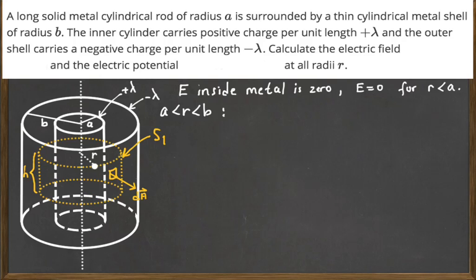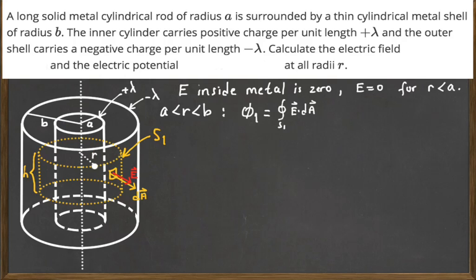We calculate the electric flux through the side surface S1 of the Gaussian cylinder. The area vector at every point on the side surface is perpendicular to the surface, and because of symmetry the electric field points in the same direction due to the positive charge inside. The top and bottom surfaces of the cylinder contribute zero flux because the electric field and area vectors are perpendicular there. So the only flux is from the side area, which equals E times 2πrh.